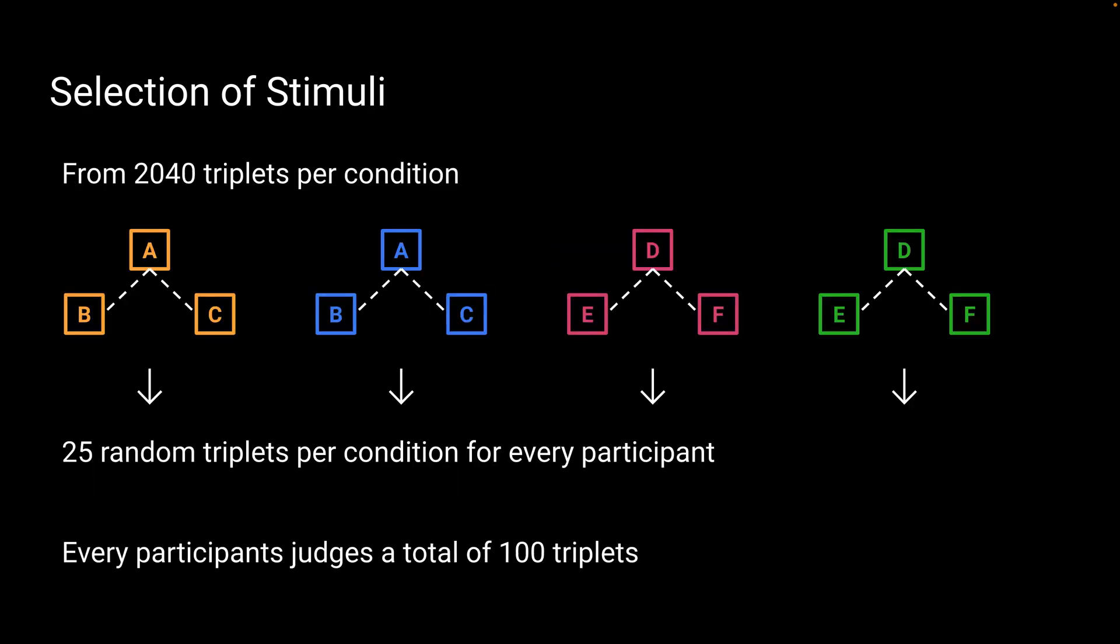So to make it easier for participants to answer their questions, from the 2,040 triplets per condition, we randomly select 25 triplets for every participant. So every participant judges a total of 100 triplets.